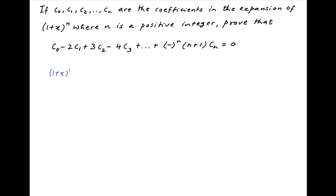The standard binomial expansion of (1 + x)^n is equal to c0 + c1*x + c2*x^2 + ... + cn*x^n.